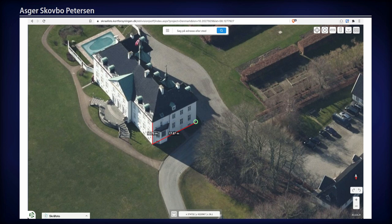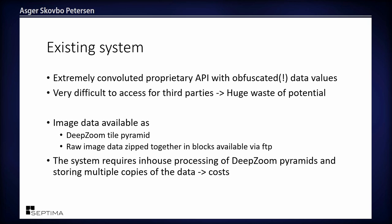You can also do measurements — measure distances on terrain or from terrain upward. There are lots of use cases; this is widely used in Denmark by people not connected to the geo industry: window cleaners figuring out how many windows need a ladder, fire brigades, solar installers, and entrepreneurs finding where to put wires. But the existing API is proprietary and extremely convoluted — almost impossible to use — and they've even obfuscated the data values.